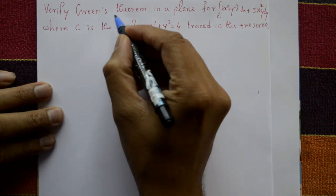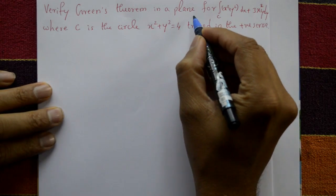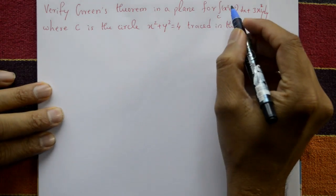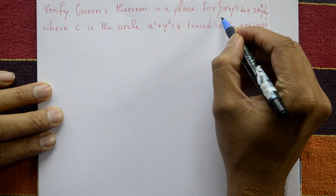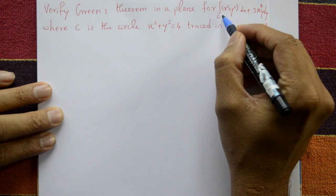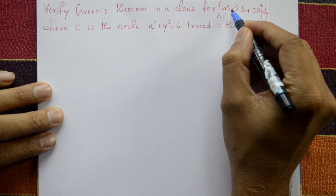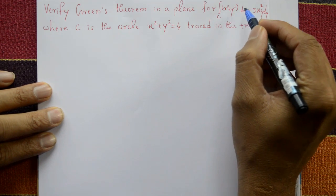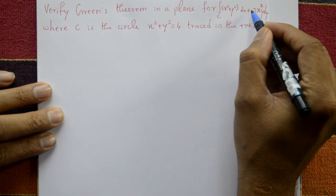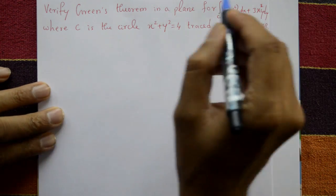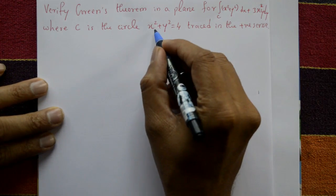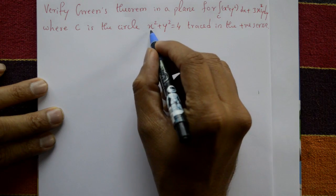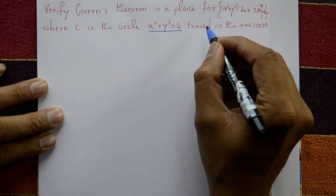Verify Green's theorem in a plane for the integration over a closed curve C of (x² + y²)dx + 3x²y dy, where C is the circle x² + y² = 4, traced in a positive sense.